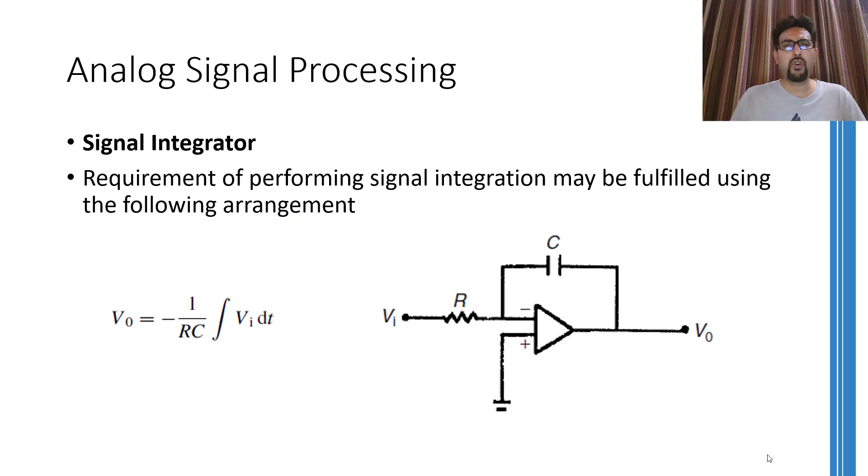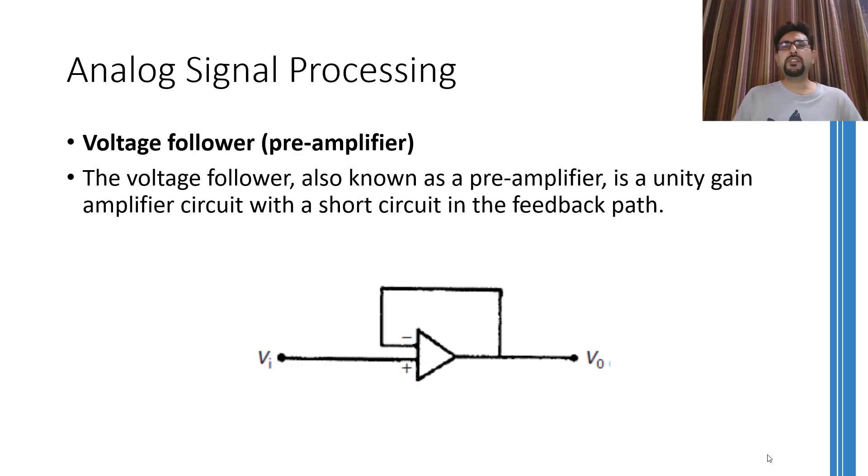The circuit shown over here is capable of integrating the input voltage. During the implementation of automatic feed control, integration of voltage signal is a very important task and to perform this thing in the analog domain, these kind of circuits may be used. This brings me to a very important component used in analog signal processing and this thing is called a voltage follower.